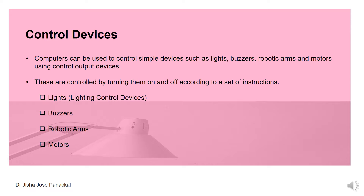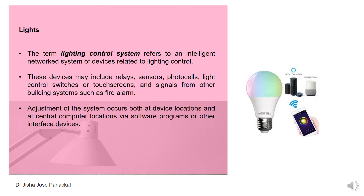There are lights, buzzers, robotic arms, and motors. Lights can also be seen as lighting control devices. The term lighting control system refers to an intelligent network system of devices related to lighting control. It involves lights and relays, sensors, photocells, light control switches or touch screens, and signals from other building systems such as fire alarms.